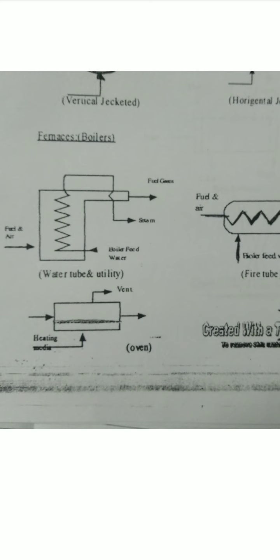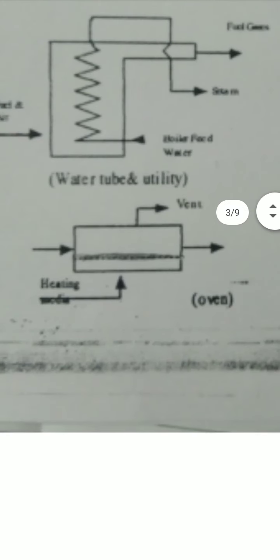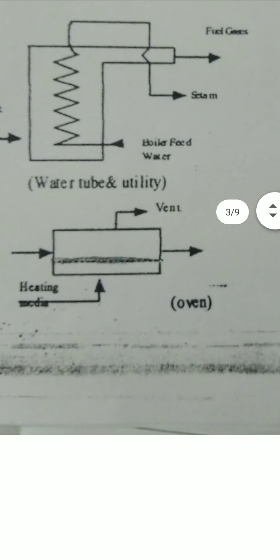Then you can see the symbol of the oven. It is a simple rectangle, with arrow marks showing heating media and vent. This is the typical symbol of an oven used for drawing flow sheets. The oven symbol is very simple and easy to remember for the exam.